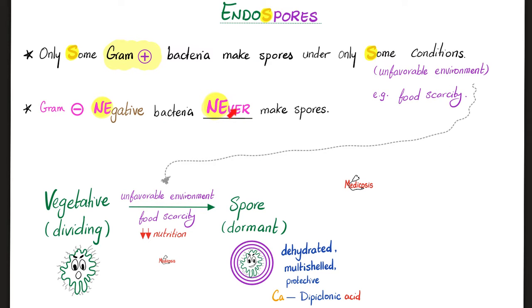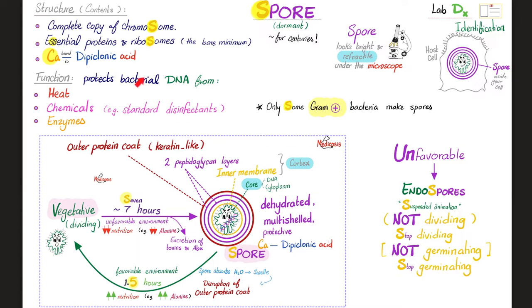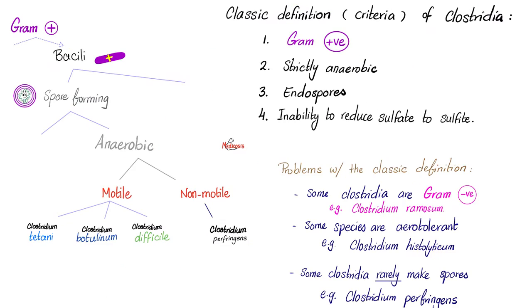Can they make spores? Yes, they can, but that's not the big deal. The big deal is their toxins. Toxin A is enterotoxin; Toxin B is cytotoxin. The structure and function of spores were mentioned in previous videos.